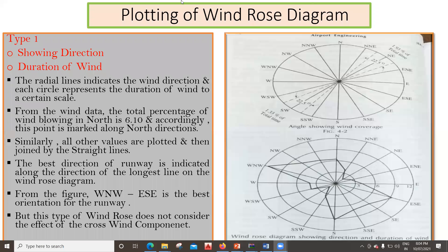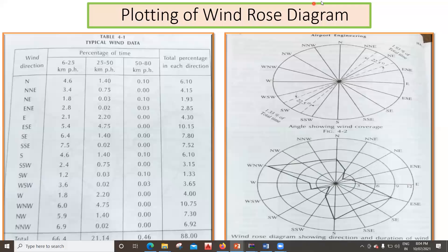Once you've done the marking with north, south, west, east and all directions, next you have to draw circles. Draw the first circle, then another circle, and so on. Once the circles are drawn, assign a scale value to each. For example, this circle is 3, the next is 6, the next is 9, and the outermost shown is 12. These represent percentage duration values.